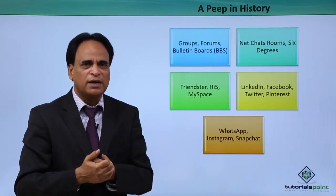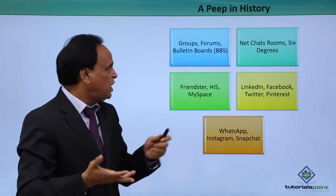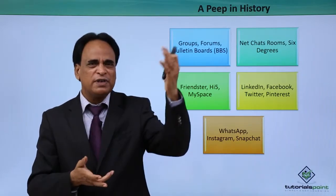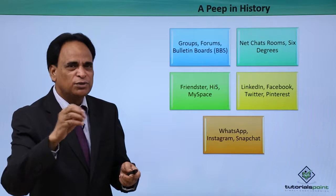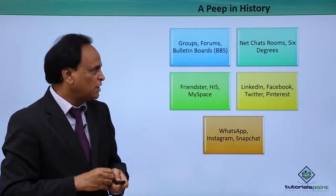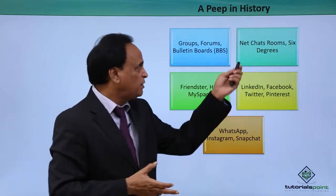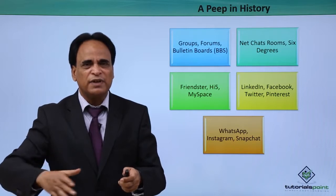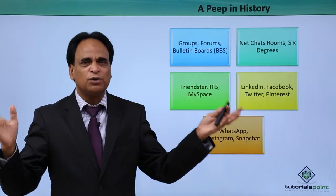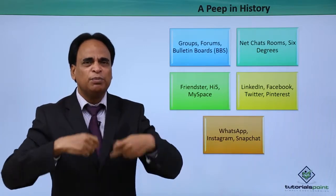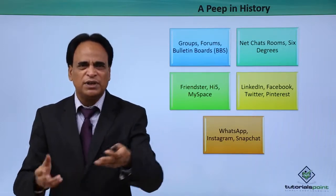Earlier we had groups, forums, and bulletin boards that existed for about 20 years. These were places where people used to interact and exchange information. Then we had internet chat rooms — a lot of them were available, such as the Six Degrees chat rooms. These chat rooms enabled live chat between you and other users, where you could join groups and engage with them either personally or professionally.